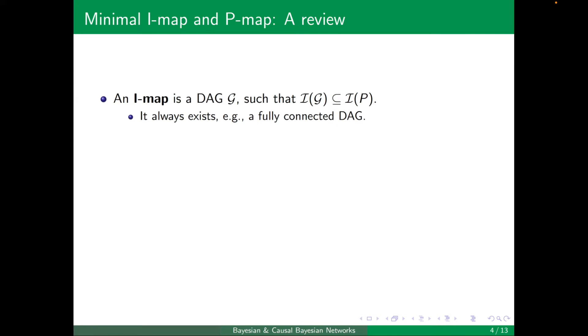An I-map always exists, for example, a fully connected DAG, and a minimal I-map is an I-map that if we take one edge out, then it's no longer an I-map.